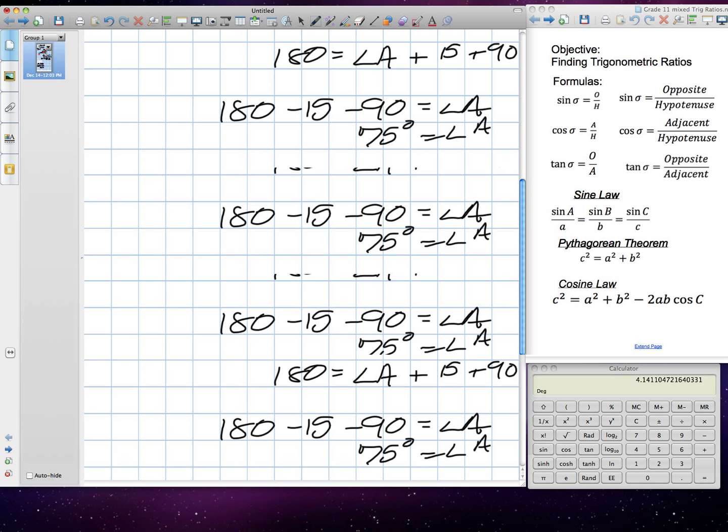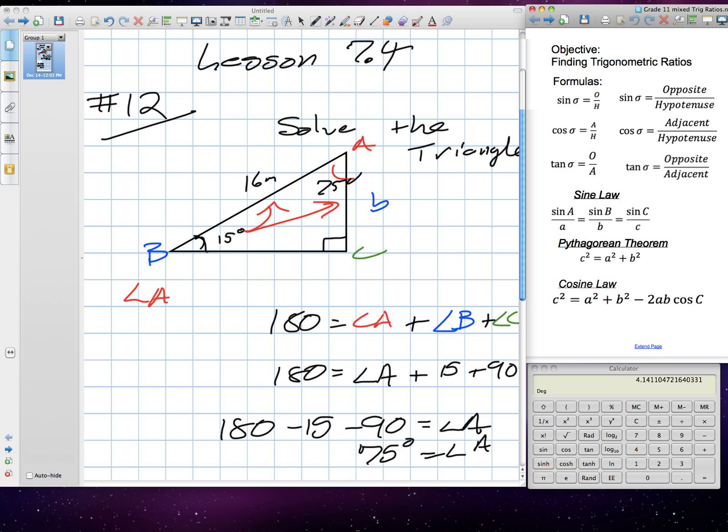So, let's put this together. Side B is 4.14. Let's say approximately 4. Okay? There we go. Approximately 4.